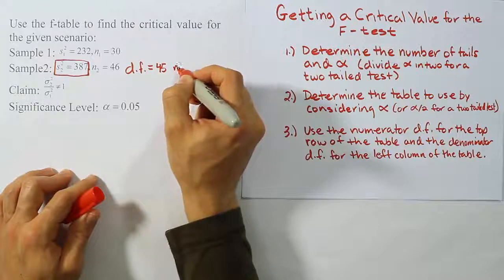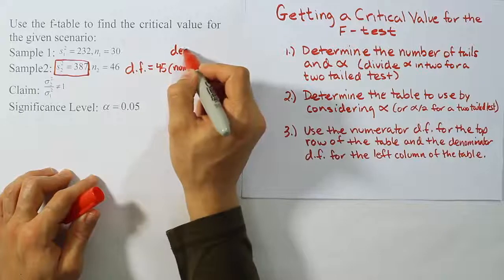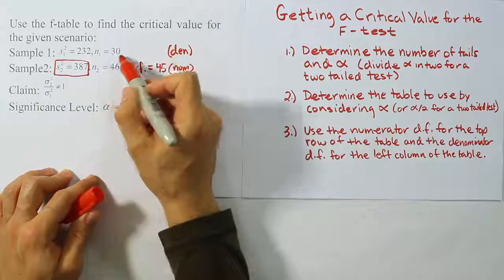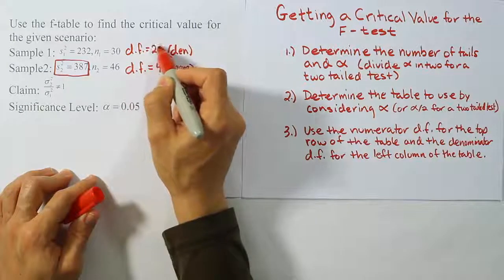I'm going to put a little note here that this is the numerator. And then for the denominator degrees of freedom, we're going to let this be that value. So degrees of freedom for the denominator will be 29.